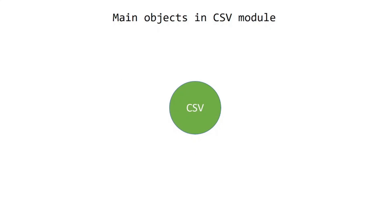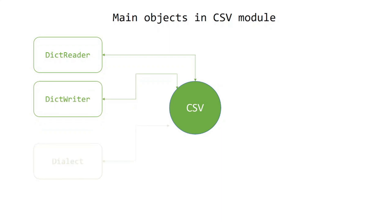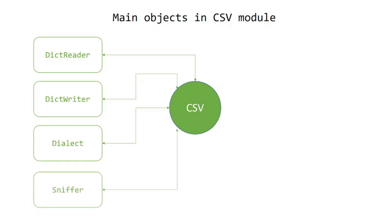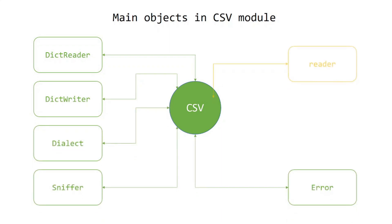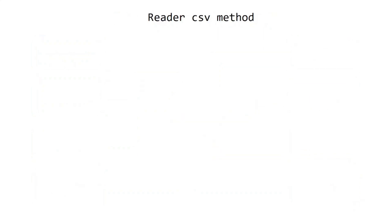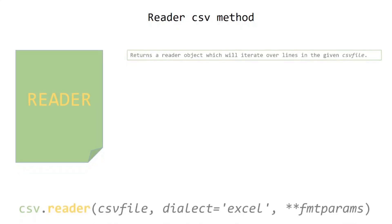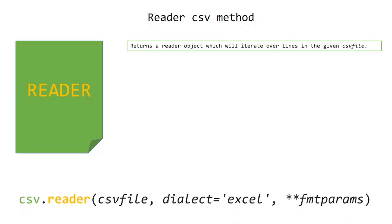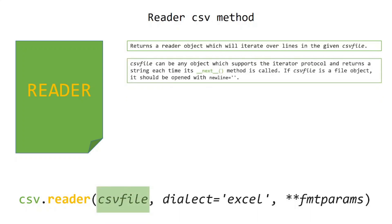The main objects of the CSV module are the reader, the writer, dialect, sniffer, error, reader method, and writer method. The csv.reader() method returns a reader object which will iterate over lines in the given comma-separated file. A CSV file can be any object which supports the iterator protocol and returns a string each time its next method is called.